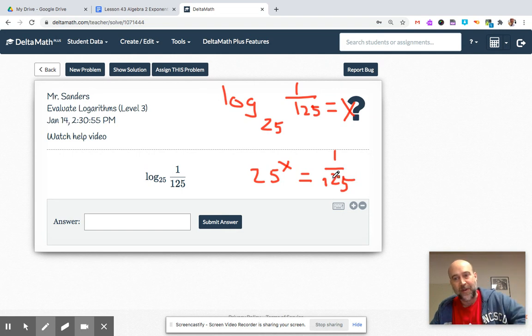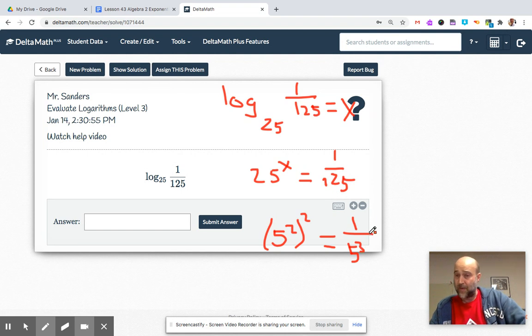Start to manipulate it. We want the same base, so we have to go from there. That's 5 squared to the X. 25 is 5 squared, 125 is 5 cubed. Do you remember what makes a number flip into the bottom? What kind of exponent? Negative exponents.